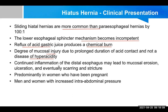Sliding type hernia is more common in women who have been pregnant, because of increased intra-abdominal pressure pushing everything upward and the effect of progesterone relaxing the tissues, making herniation easier. Men and women with increased intra-abdominal pressure also have this condition. Type 1 hiatal hernia is frequently found in overweight or obese patients. Many patients with Type 1 have no symptoms initially, because symptoms require reflux esophagitis to develop.